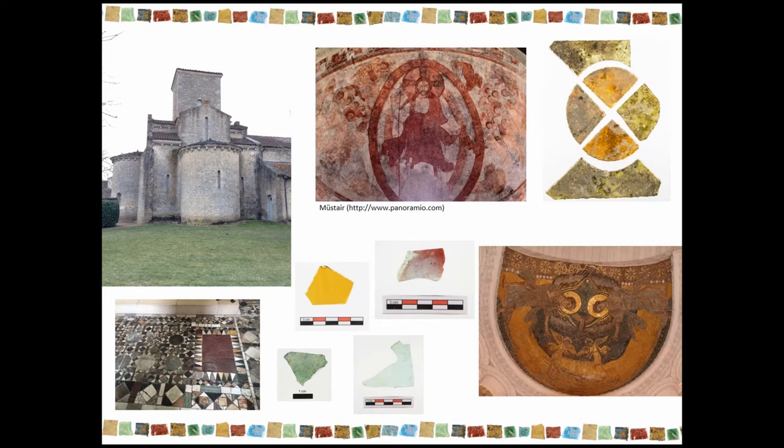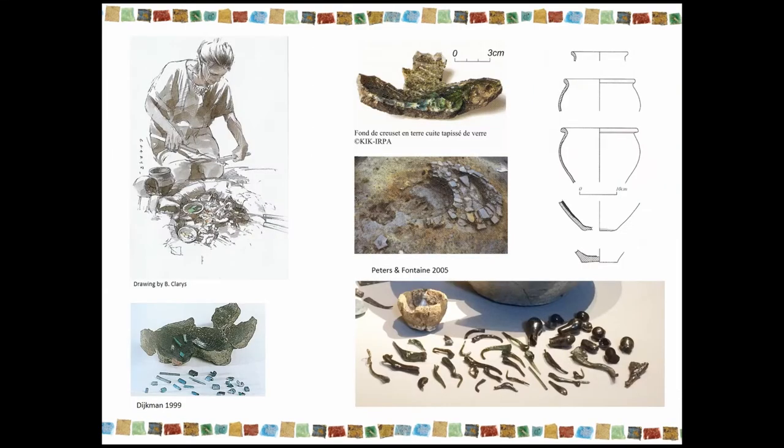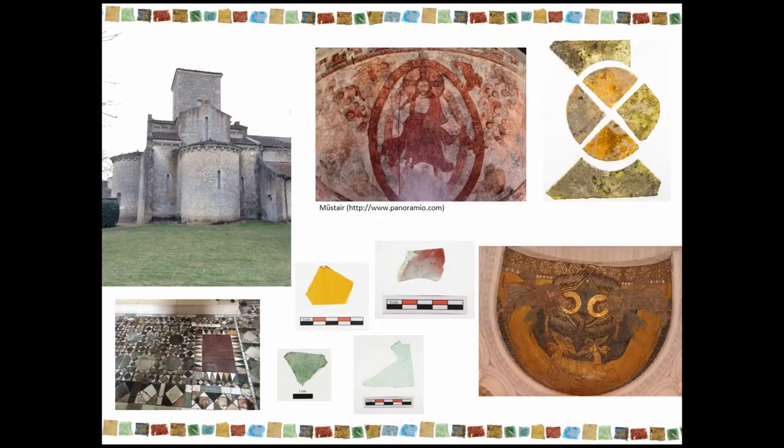If window glass is among the first to experience a modification in the recipes, tesserae are going to stay in the Roman tradition and they will long be made with natron glass.